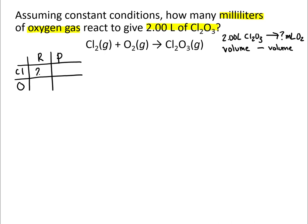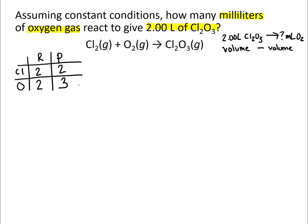On the reactant side we've got two chlorine atoms and two oxygen atoms. On the product side we have two chlorine atoms but three oxygen atoms, so we need to fix that. In order to do stoichiometry of any kind, we have to start with a balanced equation. We'll start with the oxygen. The lowest common denominator is six, so we multiply the product side by two and the reactant side by three where we see oxygen.